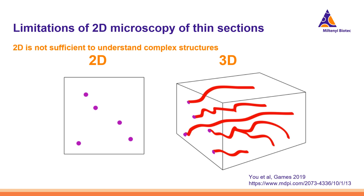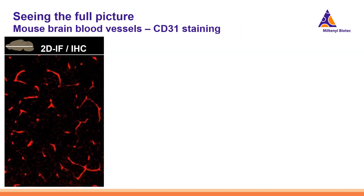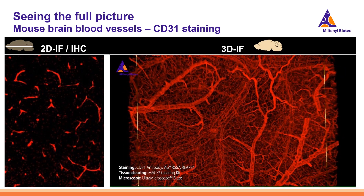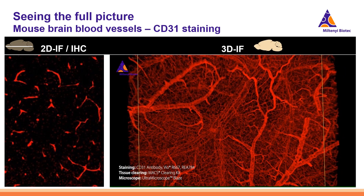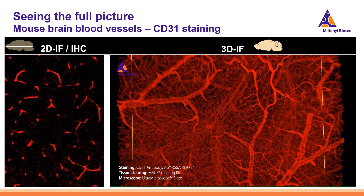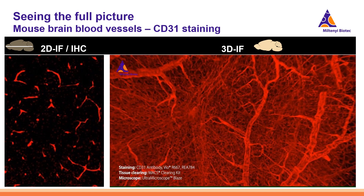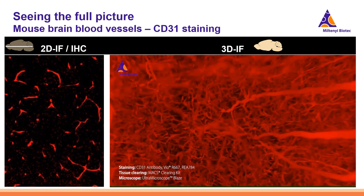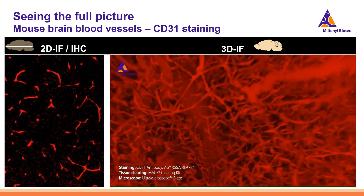Even if you are achieving flawless sectioning and imaging in 2D, artifacts frequently hamper the reconstruction of clear individual images. Here is a concrete example showing the disparity between 2D and 3D images. On the right side, you can clearly observe more intricate details of the blood vessels within the adult mouse brain hemisphere after 3D imaging, in comparison to the 2D imaging displayed on the left side panel.